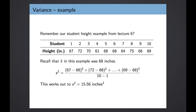I don't expect that the number 15.56 inches squared is really going to mean anything to you right now — you're not going to say 'I know exactly what that distribution looks like.' But now we have introduced how we calculate the variance, and we're going to go into some more intuition for how to think about variances with our data.